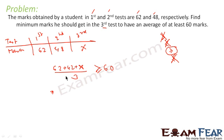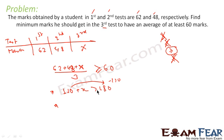Adding 62 and 48 gives 110. So 110 plus x divided by 3 is greater than or equal to 60, which gives 110 plus x is greater than or equal to 180. Moving 110 to the other side, x is greater than or equal to 70. So the minimum marks needed in test 3 is 70, so that the average across the three tests is at least 60.